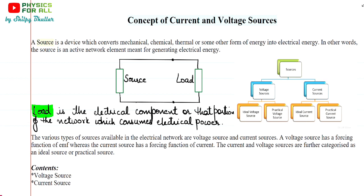Generally, we represent this load as a resistor most of the time, because the role of a resistor is that it opposes the flow of current. In other words, it actually consumes a lot of electrical power. That's why in all the diagrams, we will represent load by a resistor — because the resistor restricts the flow of current, or we can say it absorbs whatever source energy is coming and consumes it considerably. Simply, source provides you the electrical energy and load consumes that electrical energy.